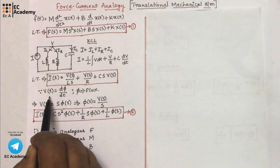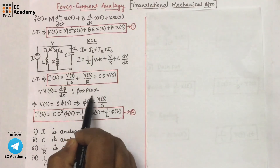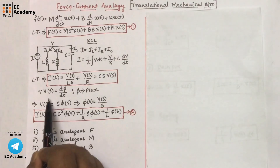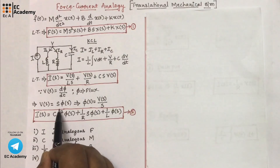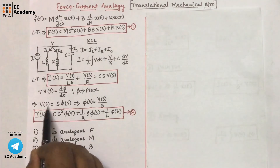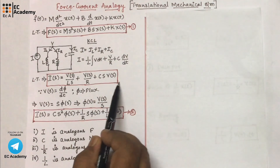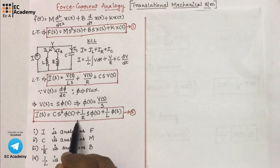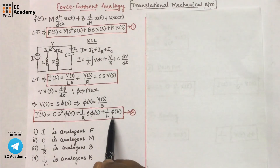We know V(t) = dφ/dt, where φ is flux. So we are writing the equation of voltage in terms of flux. Applying Laplace transform, we get V(s) = s·φ(s), which gives φ(s) = V(s)/s. Using this in the above equation, we get I(s) = Cs²φ(s) + (1/R)s·φ(s) + (1/L)φ(s).